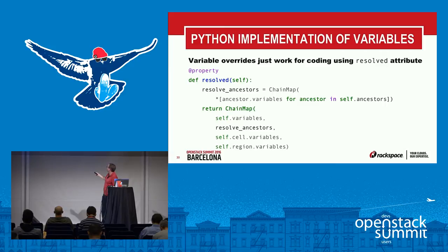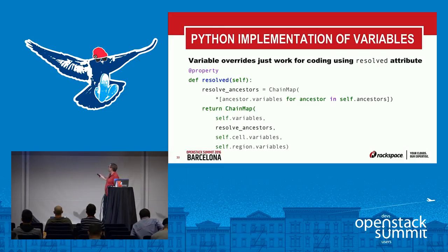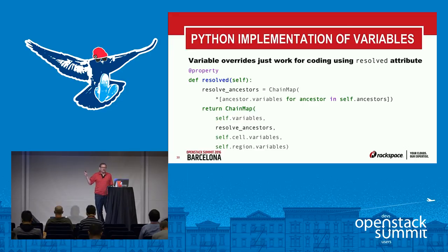We have a simple-to-use mixin class for variable support that allows us to readily identify what happened — where did this setting come from, who made that setting, and what was the whole workflow associated with making that change. Python 3 has a really nice feature called ChainMap which allows you to implement scoping logic for variables similar to Python's local versus global scope resolution. Here we use it to resolve all ancestors in the device tree and make that part of a chain — also looking up for the cell and for the region. If you want to configure something at the highest level, the region, you can just do it there. Very simple code.